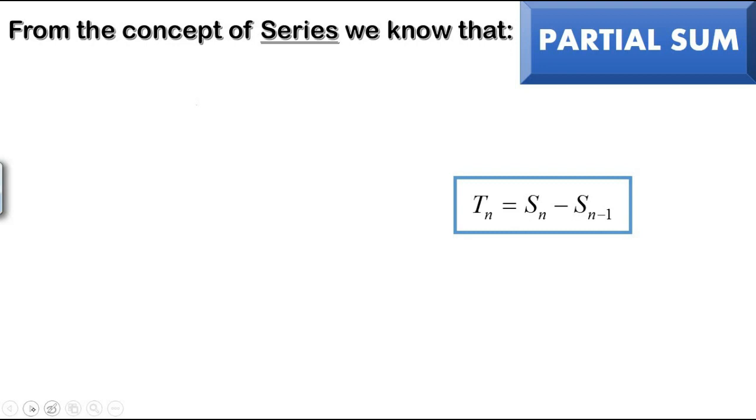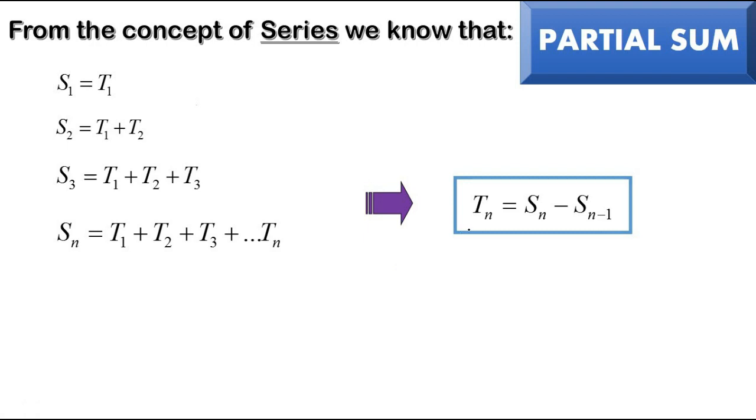Partial sums: when you know the concept of series, we already know that S1 is actually T1, S2 is actually T1 plus T2, and so on. We can conclude that Sn is T1 plus T2 up until Tn. Therefore, we can conclude that Tn is basically Sn minus Sn minus 1. So if you want to find T4, it's actually S4 minus S3.